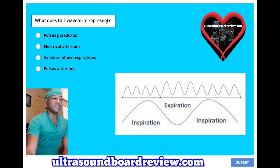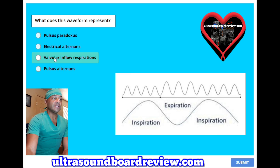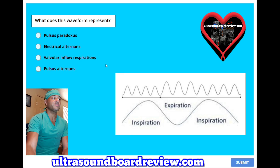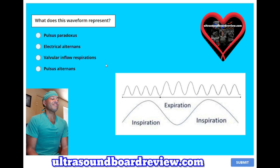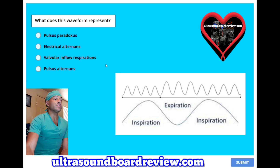What does this waveform represent? A, pulsus paradoxus; B, electrical alternans; C, valvular inflow respirations; or D, pulsus alternans? The answer is A, pulsus paradoxus.